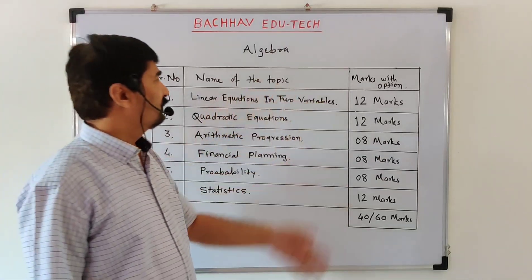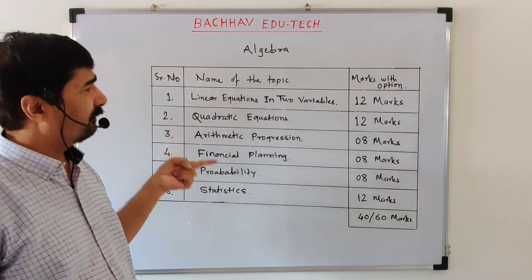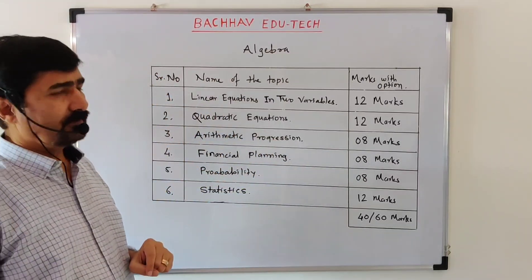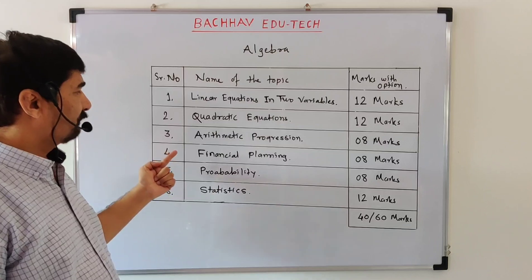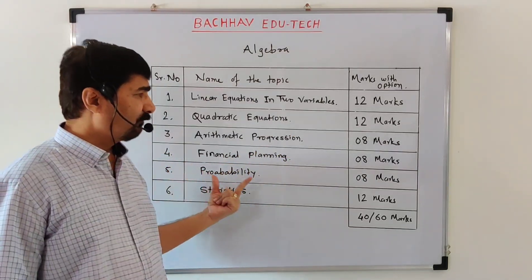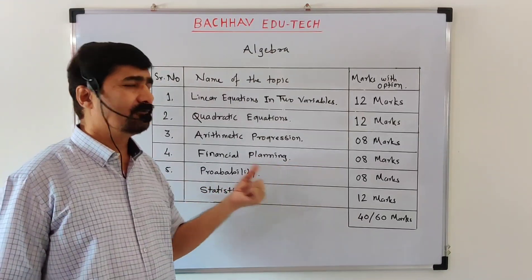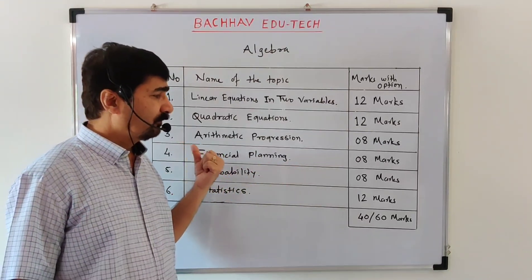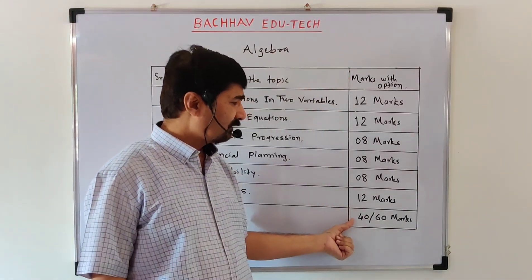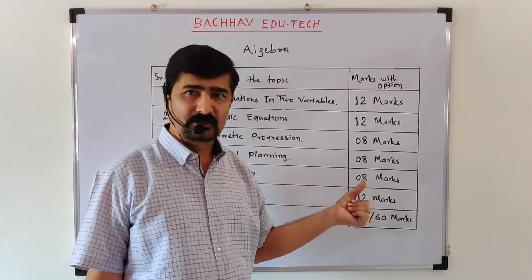The weightage is as follows: Chapter 1 carries 12 marks, Chapter 2 (Quadratic Equations) is 12 marks, Chapter 3 (Arithmetic Progression) is 8 marks, Chapter 4 (Financial Planning) is 8 marks, Chapter 5 (Probability) is 8 marks, and Chapter 6 (Statistics) is 12 marks. These all chapters are compulsory for 40 marks and with options they are called 60 marks.